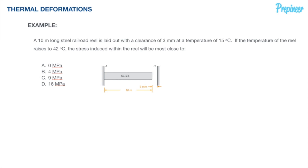Let's go ahead and read this problem. A 10-meter long steel railroad reel is laid out with a clearance of three millimeters at a temperature of 15 degrees Celsius. If the temperature of the reel raises to 42 degrees Celsius, the stress induced within the reel will be most close to what?